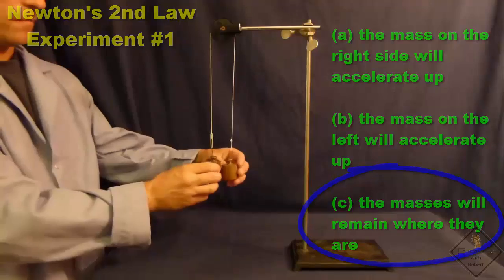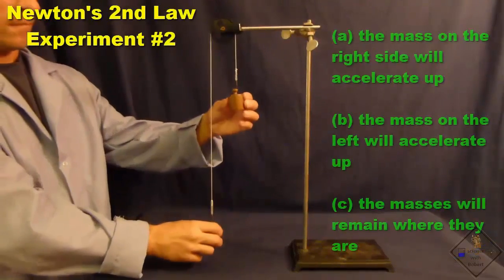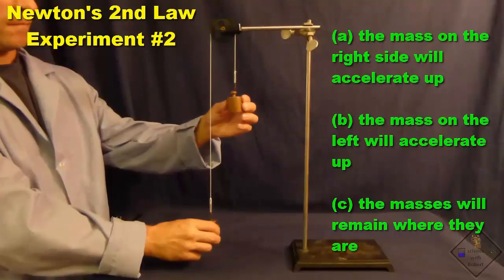This time Dr. Smith is holding the identical masses hung over a pulley at different heights. When he lets go of the masses, what do you predict will happen?